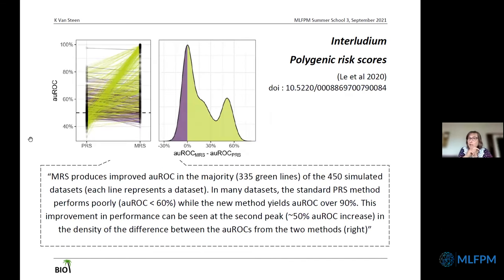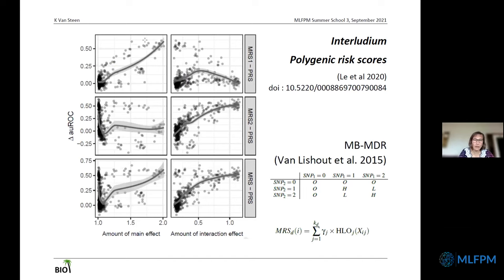Some people have been studying the incorporation of interactions into the polygenic risk score scheme. If you include interactions between genetic markers — between the SNPs you typically deal with in a GWAS context — you can actually improve performance, as seen with the area under the ROC curve. The majority of standard polygenic risk scores have an AUC under 60%, but as soon as you include interactions, this performance actually goes up — a lot of times over 90%.